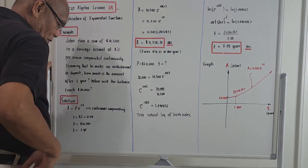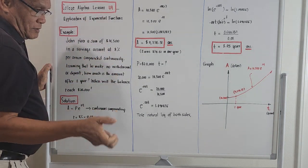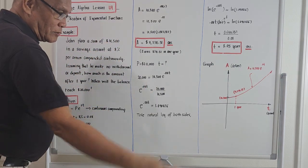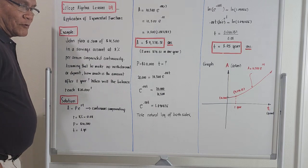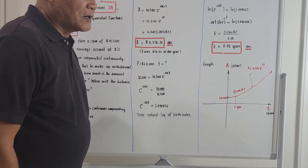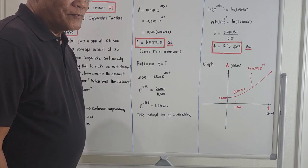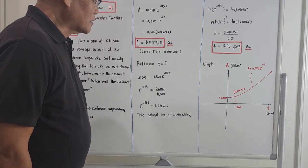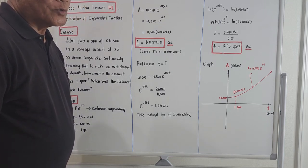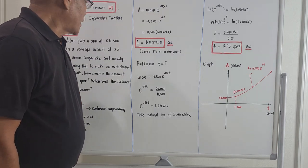The subject matter for this morning will be College Algebra Lesson 49, and the title of the topic will be 'Application of Exponential and Logarithmic Functions in Real Life.' Our topic now has relevance in real life — we don't just solve equations. This is regarding the so-called compounding of money, in which we invest in banks.